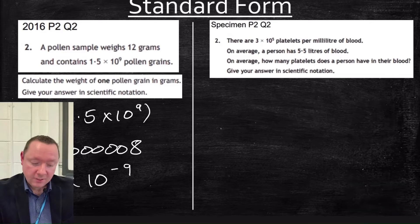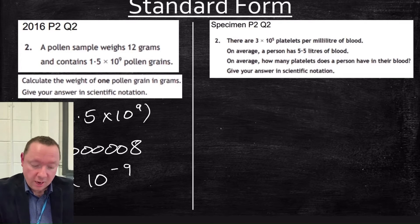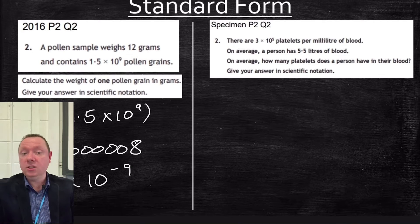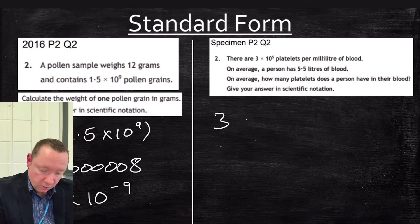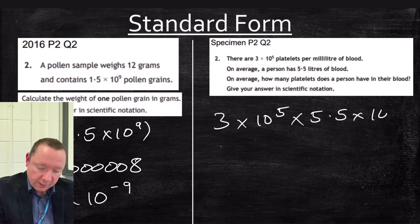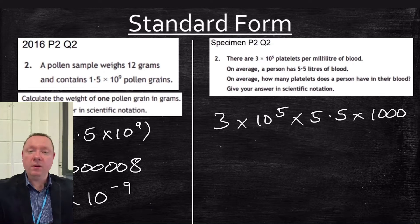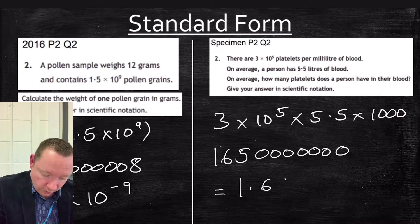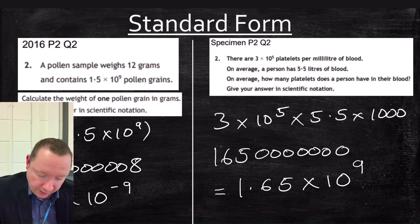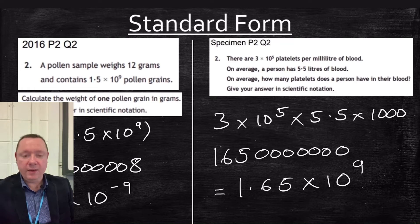There are 3 times 10 to the 5 platelets per millilitre of blood. On average, a person has 5.5 litres of blood. How many platelets does a person have? Give your answer in scientific notation. I need to multiply, so I do 3 times 10 to the 5 times 5.5 litres, but I also need to multiply by 1,000 because there are 1,000 millilitres in a litre. That equals 1.65 times 10 to the power of 9. Seven zeros plus the 6 and 5 make 9.